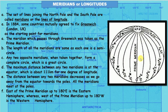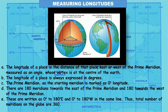All meridians meet at the poles. East of the prime meridian up to 180° east is the eastern hemisphere, whereas west of the prime meridian up to 180° west is the western hemisphere.